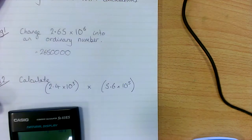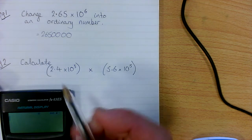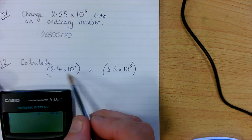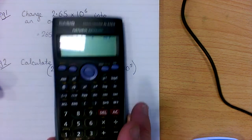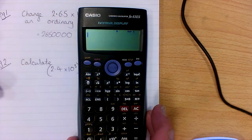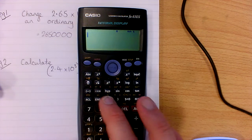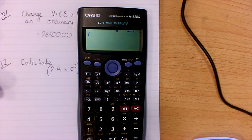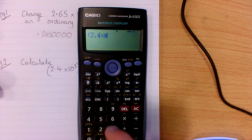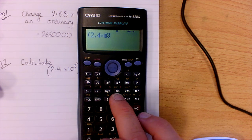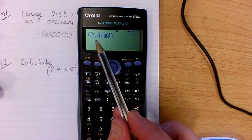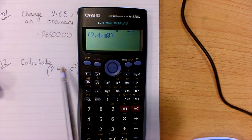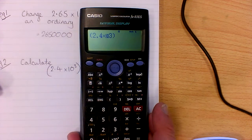For the second part, we've got a calculation. Calculations are usually given with brackets; if they're not, you have to enter those brackets. So it's quite simple: bracket to begin with, 2.4 X10X 3. That's the first bracket done, so I close it. You can see 2.4 times 10 to the 3, exactly the same like this.